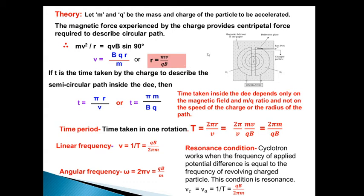If t is the time taken by the charge to describe the semicircular path inside the D, then the time equals distance by speed, so that will be πr/v, or t equals πm/Bq. Here we substitute the value of r, which will be π/v into mv/qB, so v cancels out and it will be πm/Bq. So time taken inside the D depends only on the magnetic field and the mass-to-charge ratio. It doesn't depend on the speed of the charge or radius of the path.